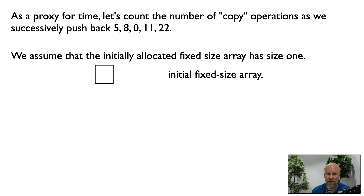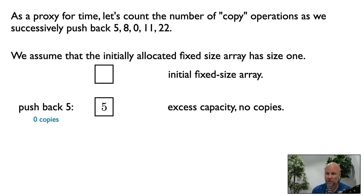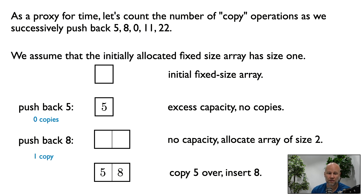Let's look at the number of copy operations as we do a sequence of pushbacks — specifically five pushbacks. Suppose we start with a fixed array of size one. For the first pushback, say we push back 5: there is excess capacity so we make zero copies. For the second pushback, say we push back 8: there's no excess capacity, so we allocate a new array of twice the size — size two. We copy 5 into the new array, so that's one copy operation.